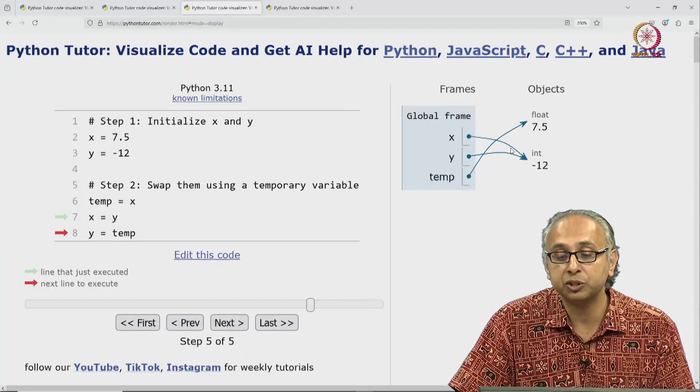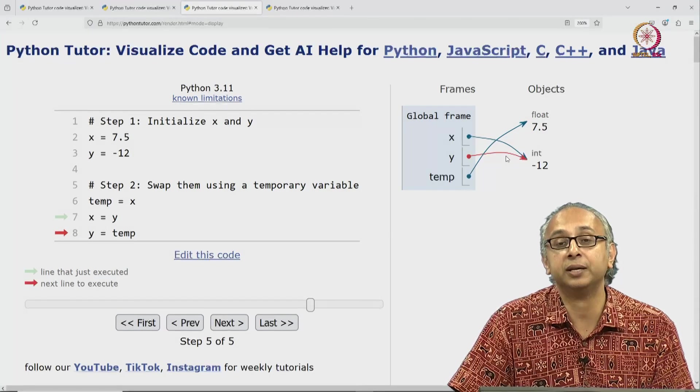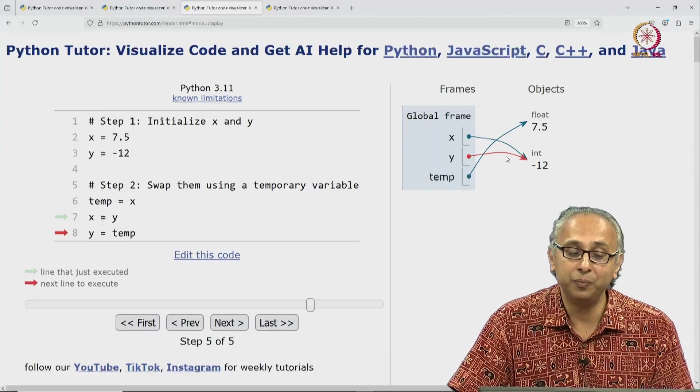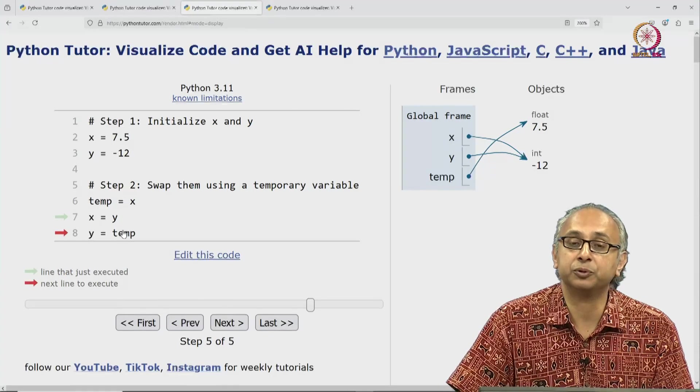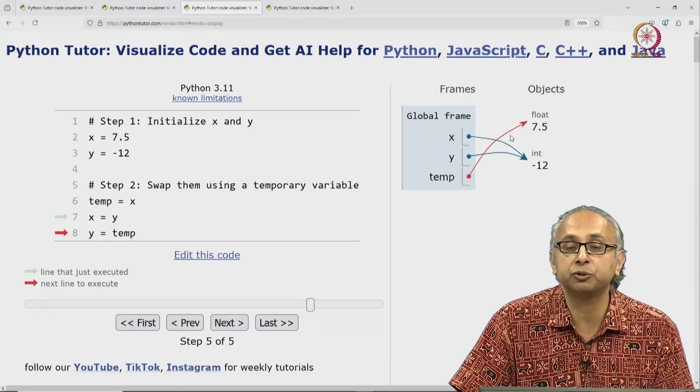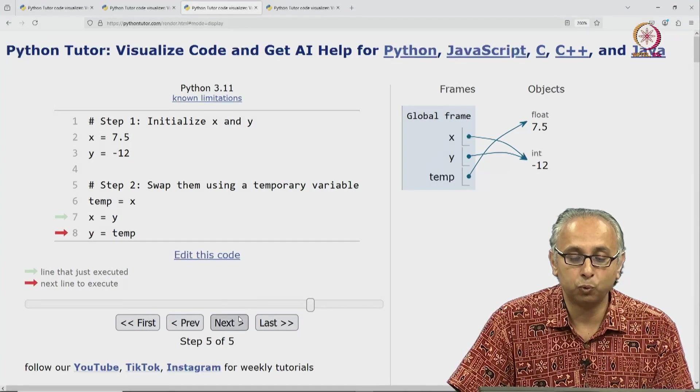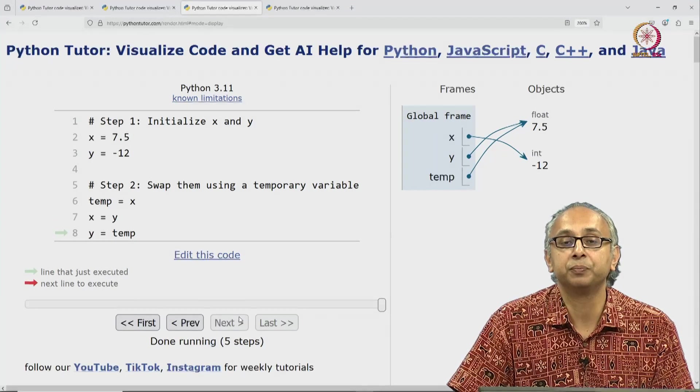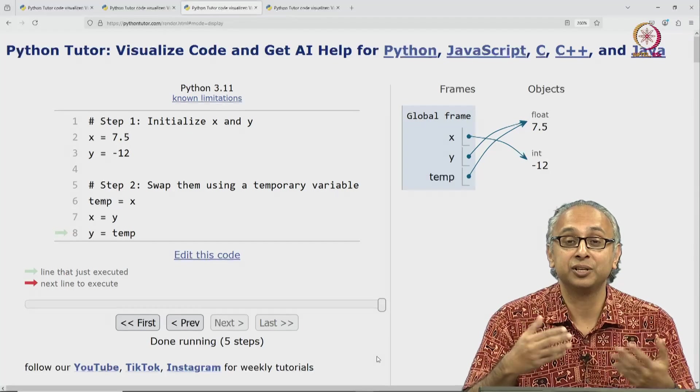So now this object has two labels on it. And now, we do y is equal to temp. So we move the y label from the integer to temp which is referring to the float object. So this moves y to the float. This achieves the swap.